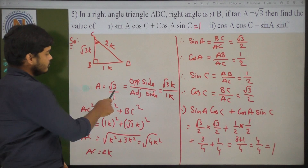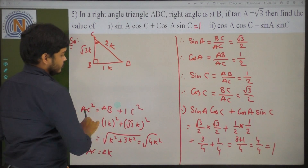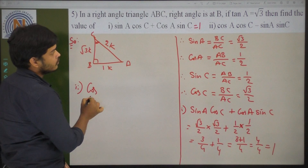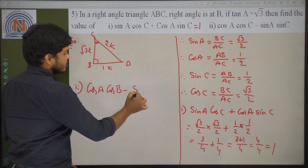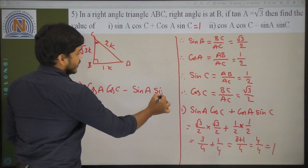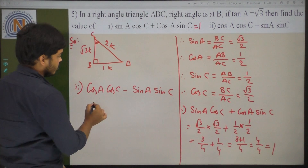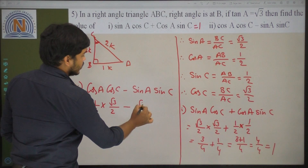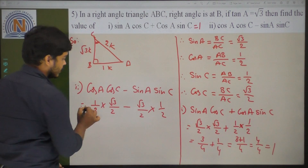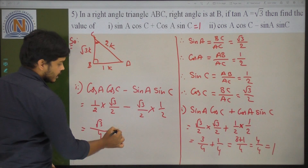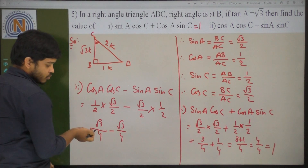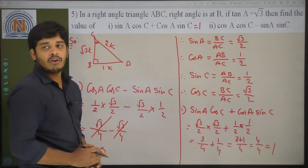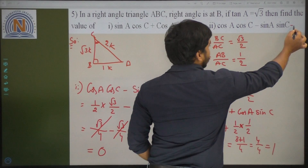Now the second part: cos A cos C minus sin A sin C. Cos A value is 1 by 2, into cos C value root 3 by 2, minus sin A value root 3 by 2, into sin C value 1 by 2. So 1 into root 3 is root 3 by 4, minus root 3 by 4. The root 3 by 4 terms cancel, so the value is 0. Therefore when tan A equals root 3, cos A cos C minus sin A sin C equals 0.